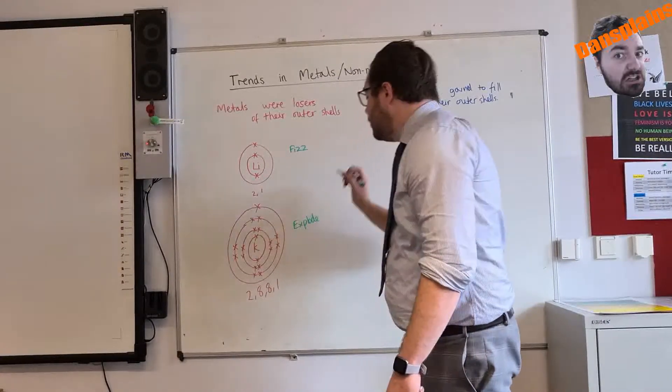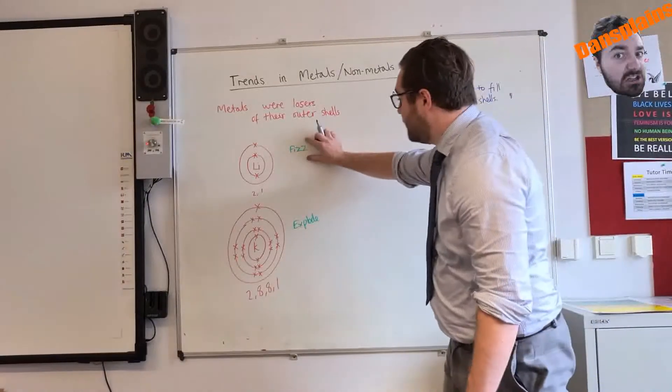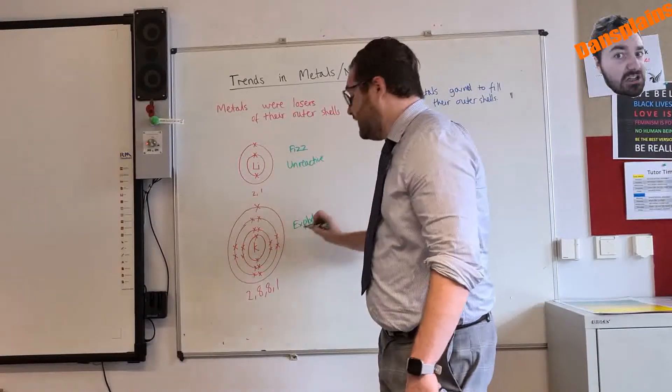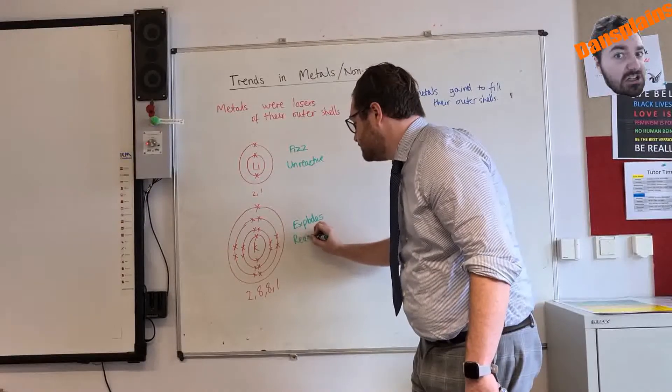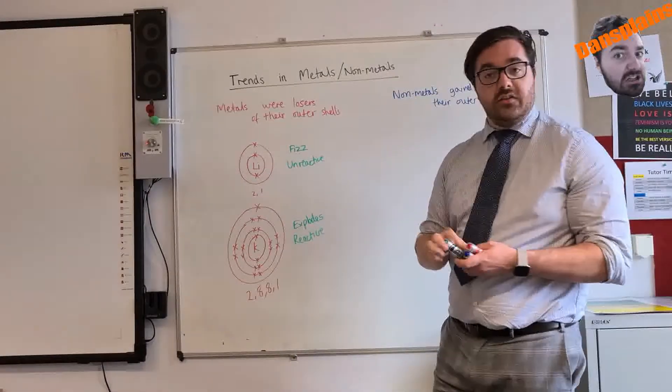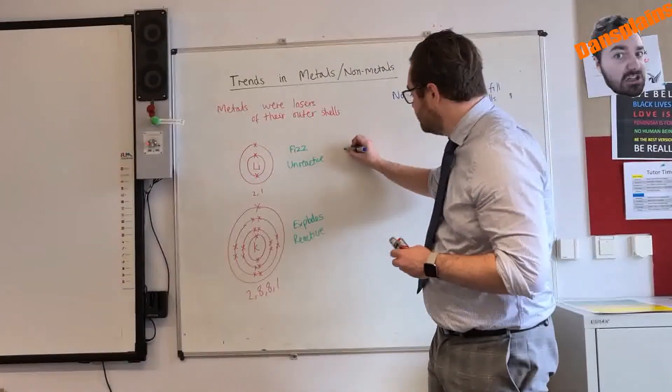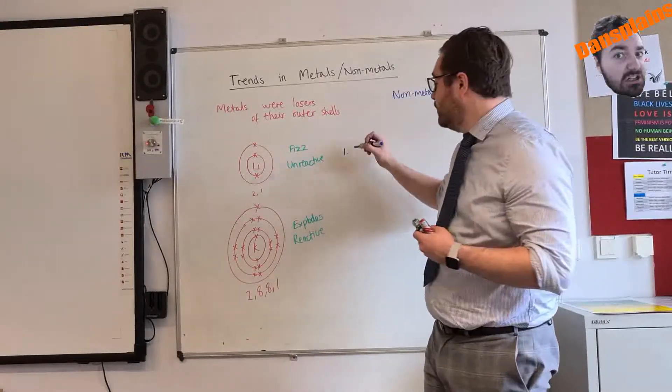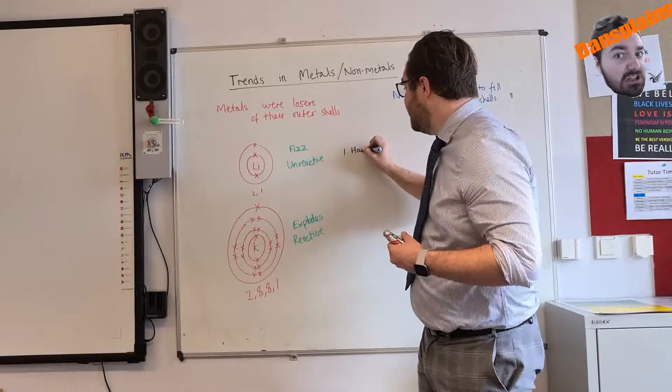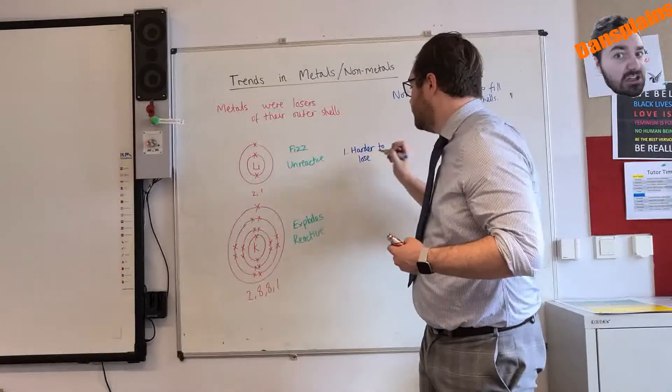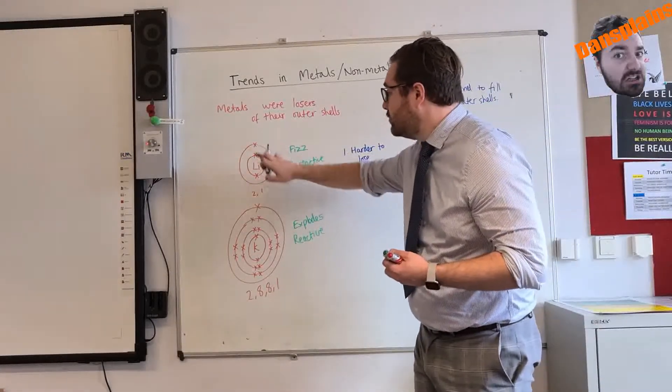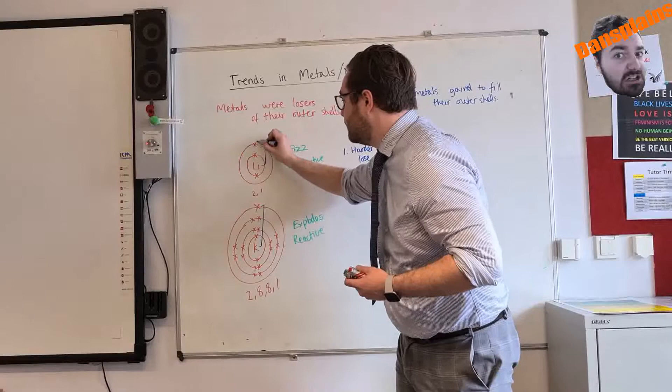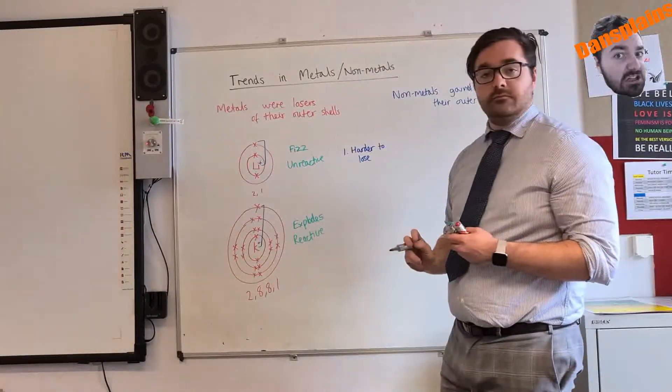Now, just on these diagrams, we can notice some very key differences, which is going to explain why this fizzes as unreactive and this explodes as reactive. Now, the first difference that you can see is that lithium has a very small distance to lose the electron. So it is harder to lose the lithium because we have a very small distance from that nucleus. And potassium, we have a very large distance to the nucleus. So that's where the positive charge is.